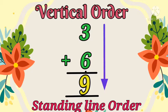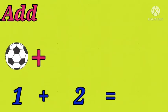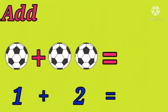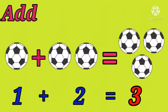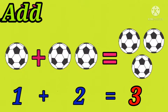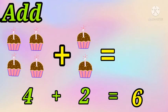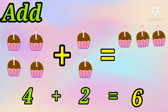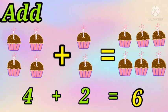Let's move on to the examples. We are going to add these objects. One ball plus two more balls is equal to one, two, three — three balls. Now there are four cupcakes and two more cupcakes. Put these cupcakes together and count how many are there: one, two, three, four, five, six. Yes, there are six cupcakes. So four and two is six. That is four plus two equal to six.